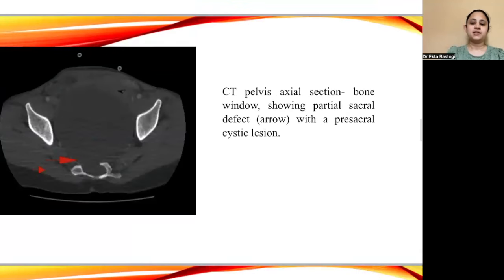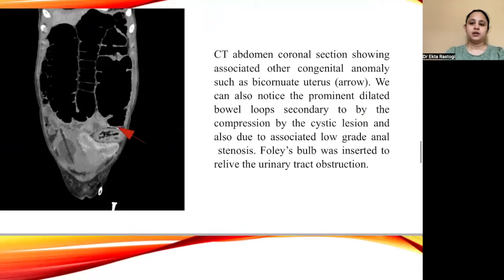CT pelvis was done; the axial section showed a partial sacral defect — indicated by the arrow — with a pre-sacral cystic lesion. CT abdomen coronal section showed associated congenital anomalies such as bicornuate uterus, shown by the red arrow. Bowel loops were dilated secondary to compression by the cystic lesion and associated low-grade anal stenosis. To relieve urinary tract obstruction, a Foley's catheter was inserted.